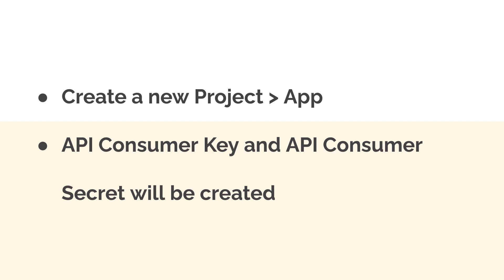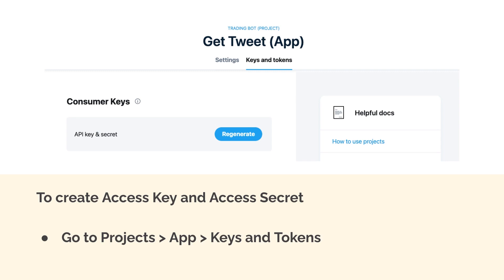Create a new project and under that project create a new app. Automatically, an API key and secret will be created for you — these are also called the consumer key and consumer secret, just different names for the same thing. That will be created by default with every app you create via the developer portal. Next, we also have to create access key and access secret pairs, so we need not only the consumer keys but also the access keys. Those are just below the consumer keys.